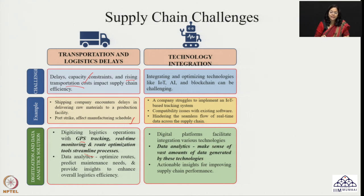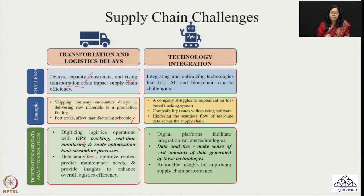The next challenge is about technology integration. We have discussed many technologies, but the important question is how these technologies can be integrated to get the benefit of technological advancement in supply chain. The major challenge is integrating and optimizing technologies like IoT (Internet of Things), AI (Artificial Intelligence), and blockchain. Integrating these different technologies and taking benefits from them is quite challenging in the supply chain domain.